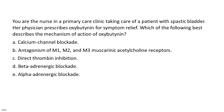You are the nurse in a primary care clinic taking care of a patient with spastic bladder. Her physician prescribes Oxybutynin for symptom relief. Which of the following best describes the mechanism of action of Oxybutynin? a. Calcium channel blockade. b. Antagonism of M1, M2, and M3 muscarinic acetylcholine receptors. c. Direct thrombin inhibition. d. Beta-adrenergic blockade. e. Alpha-adrenergic blockade.